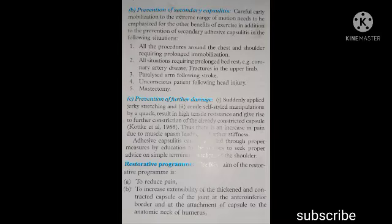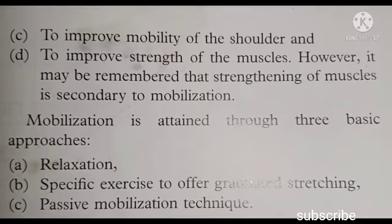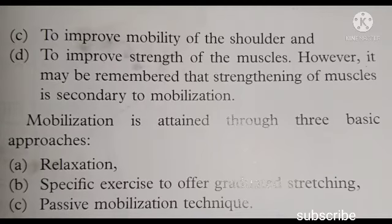Restorative program: the basic aims of the restorative program are (a) to reduce pain, (b) to increase extensibility of the thickened and contracted capsule of the joint at the anteroinferior border and at the attachment of the capsule to the anatomic neck of humerus, (c) to improve mobility of the shoulder, and (d) to improve strength of the muscles. However, it should be remembered that strengthening of muscles is secondary to mobilization.